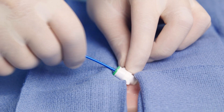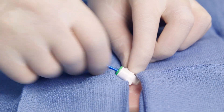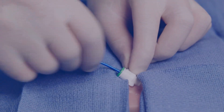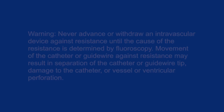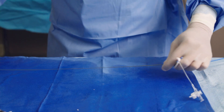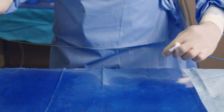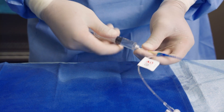Insert the catheter through the already positioned introducer sheath of appropriate size. Under fluoroscopy, position the catheter in the desired location. Remove the guide wire. Aspirate and flush both lumens.